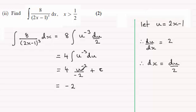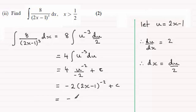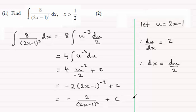So we get minus 2 times u to the power minus 2, and substituting back, u is 2x minus 1, giving minus 2 times (2x minus 1) to the power minus 2 plus c. We could also write this as minus 2 divided by (2x minus 1) squared plus c. That's the method when using integration by substitution.